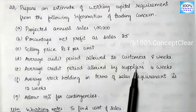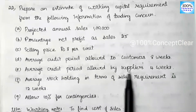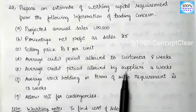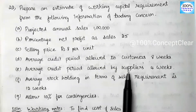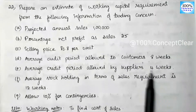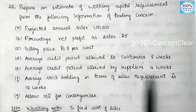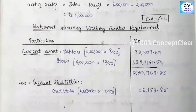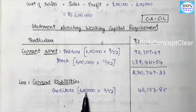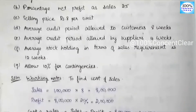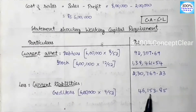The average credit period allowed by suppliers is 4 weeks. When we are in business, we purchase goods on credit, and our suppliers give us a credit period of 4 weeks. This means we pay the amount for goods within 4 weeks. So creditors are a current liability item. Creditors = Cost of Sales × 4/52 = ₹6 lakh × 4/52.